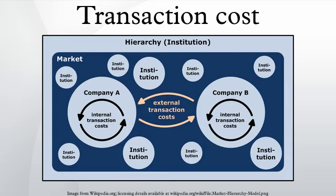In economics and related disciplines, a transaction cost is a cost incurred in making an economic exchange. Transaction costs can be divided into three broad categories. Search and information costs are costs such as in determining that the required good is available on the market and which has the lowest price. Bargaining costs are the costs required to come to an acceptable agreement with the other party to the transaction, drawing up an appropriate contract and so on.